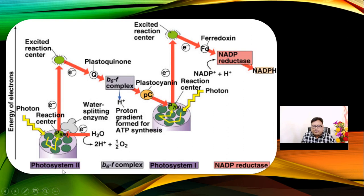Four complexes you need to know: number one, photosystem 1 and photosystem 2; second, the b6f complex; third, photosystem 1; and number four, NADP reductase. When you write the answer, you have to understand and know this part.